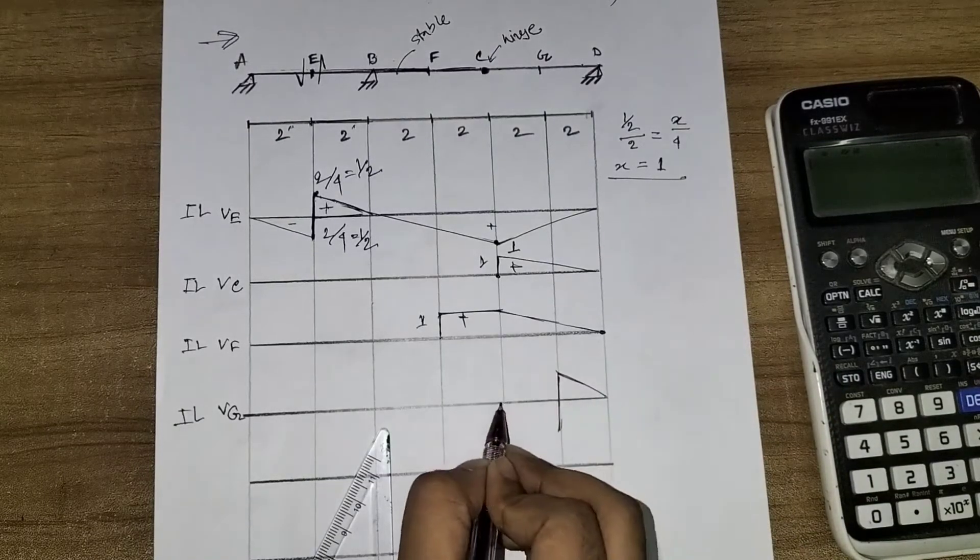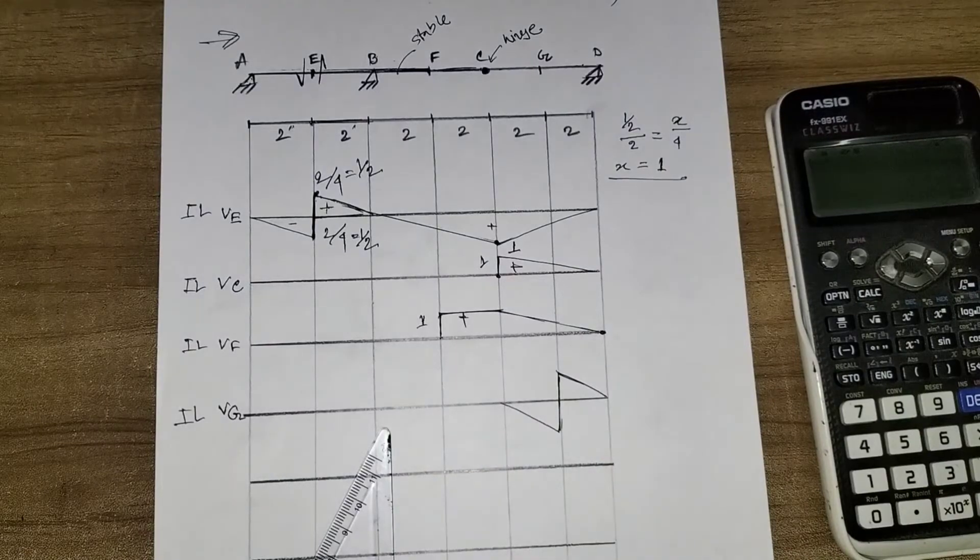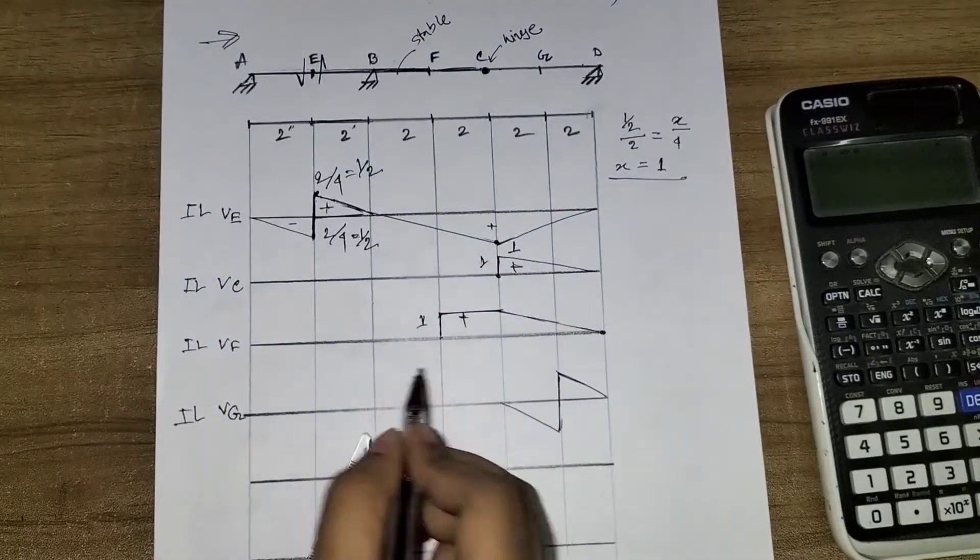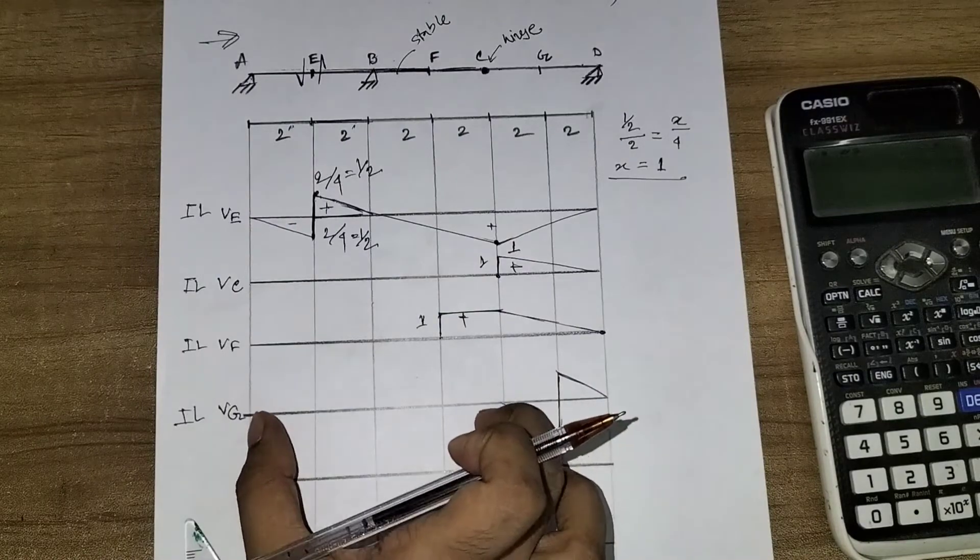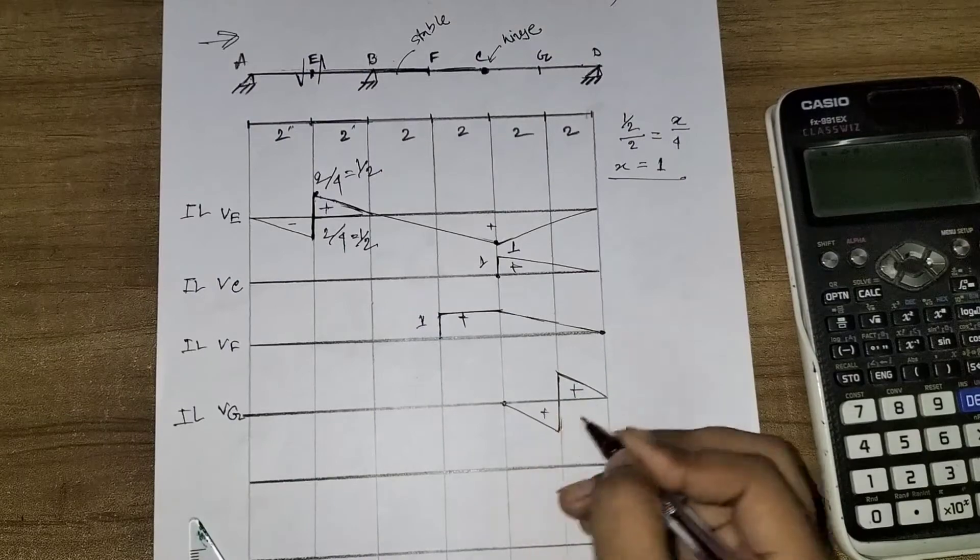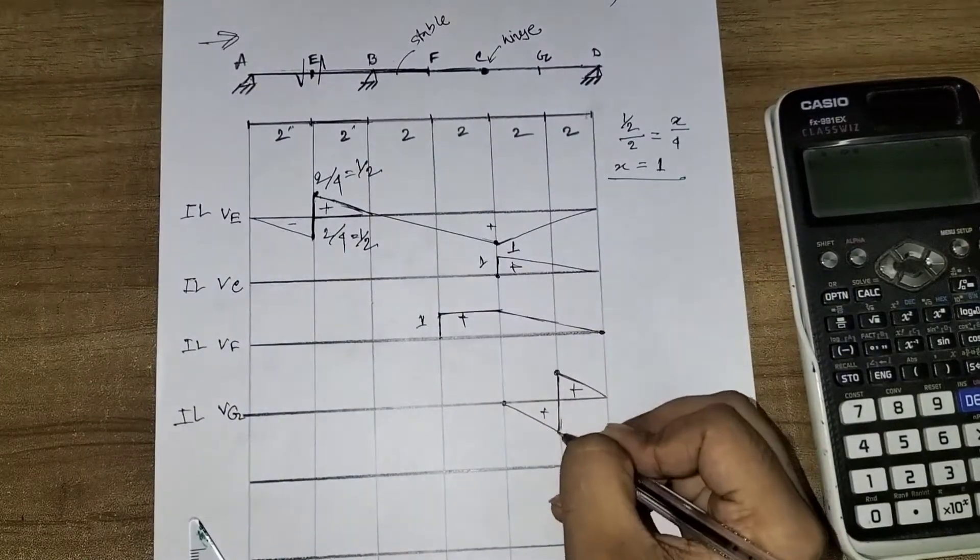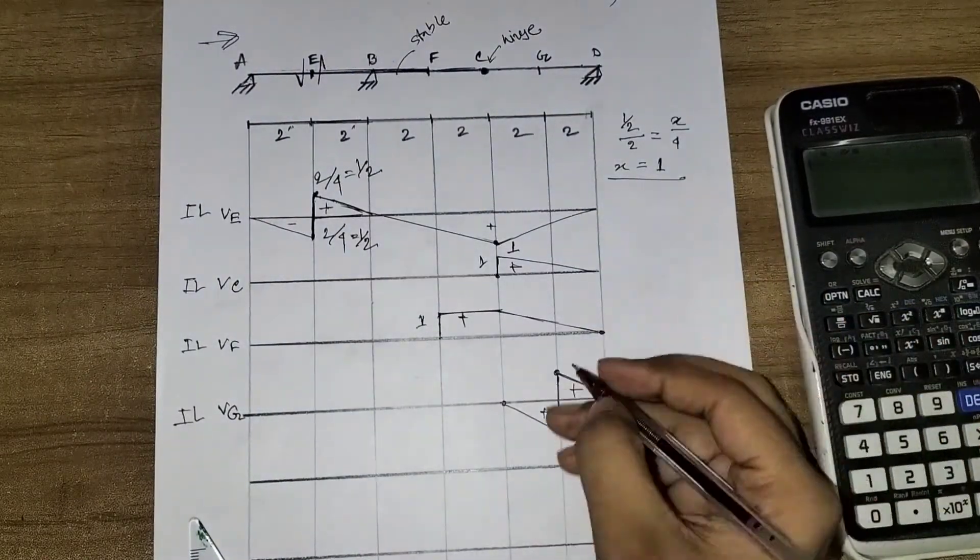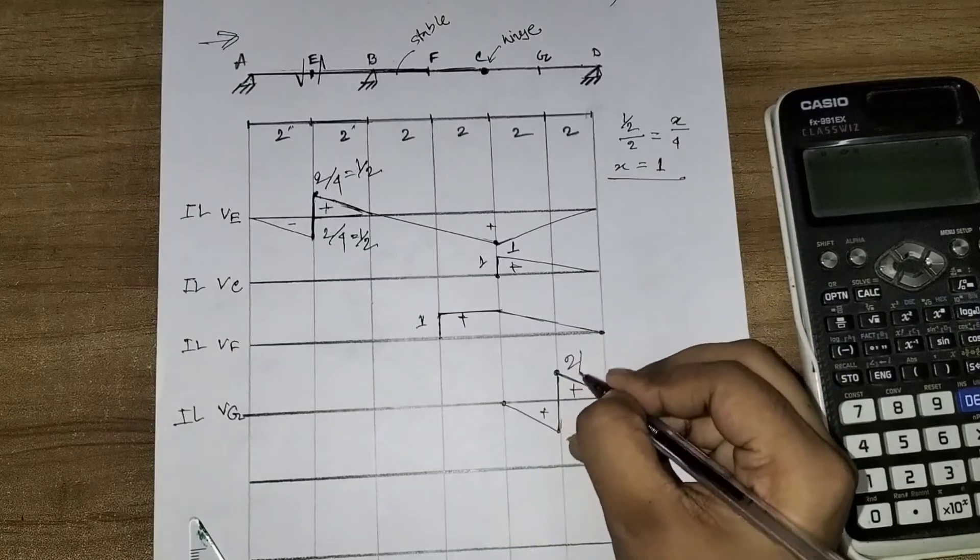If E to C is stable, then the distance equals A to C, which is 2 by 4.